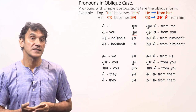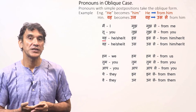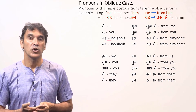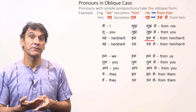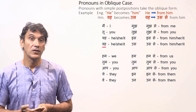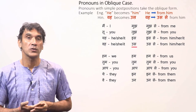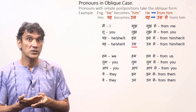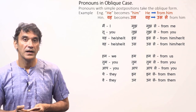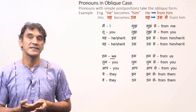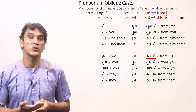यह (he/she/it) has the oblique form 'इस' — 'इस से' means 'from him/her/it'. वो (he/she/it) has the oblique form 'उस' — 'उस से' means 'from him/her/it'. हम (we) stays the same as 'हम' — 'हम से' means 'from us'. Some pronouns do not change in oblique case.